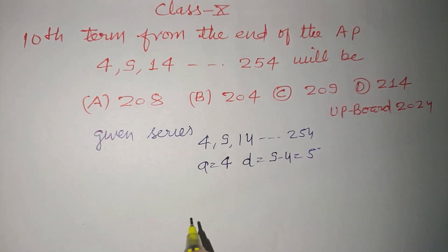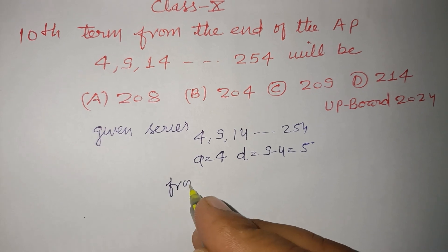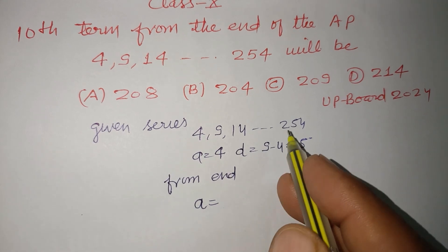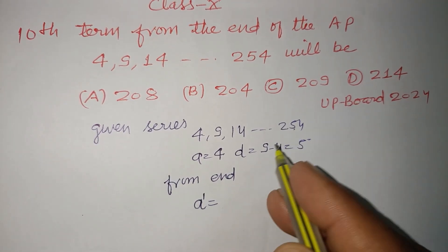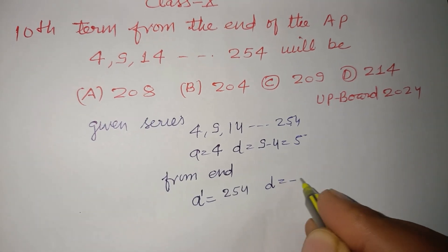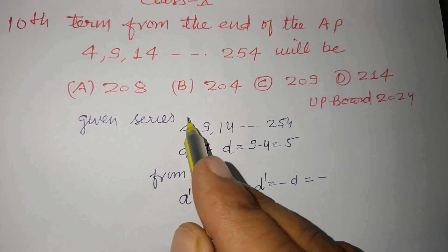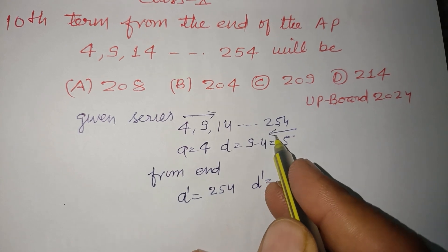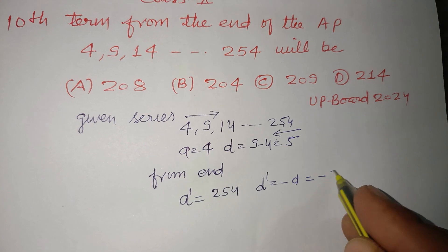This is the last term. From the end, a dash is 254. d dash is minus d, which is minus 5, because here it is increasing arithmetic progression, and from the last it is a decreasing arithmetic progression.